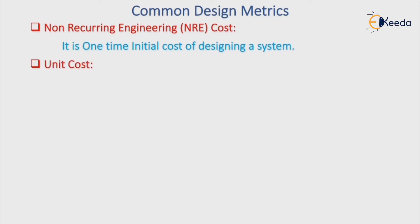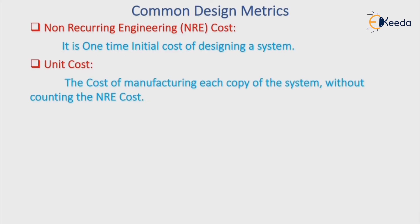The next metric is unit cost — the cost of manufacturing each single copy of a system. It is the cost of manufacturing each single copy of a system without including NRE cost. That is nothing but unit cost.